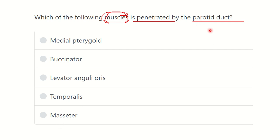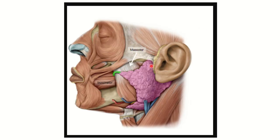The parotid duct arises from the parotid gland and opens in the vestibule of the mouth. The parotid gland is one of the three pairs of major salivary glands, and it produces a duct known as the parotid duct.